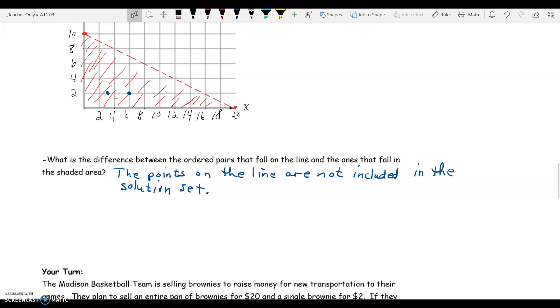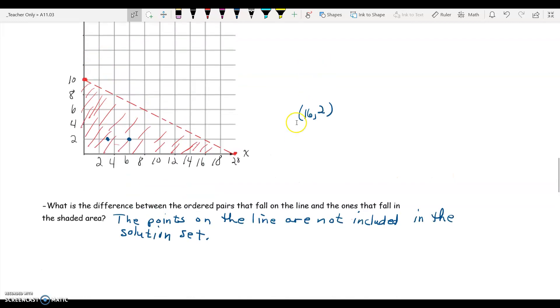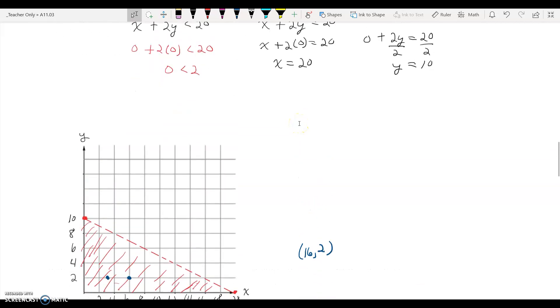For example, if we use the point sixteen two, looks like sixteen two is on that line. If we use the point 16 comma 2 and we plug that into the inequality, 16 plus 2 times 2 is less than 20, but we see this is 16 plus 4 is less than 20, and that's a false statement.